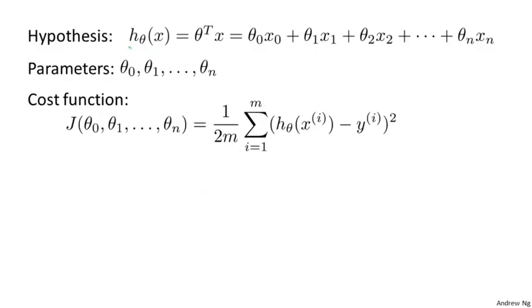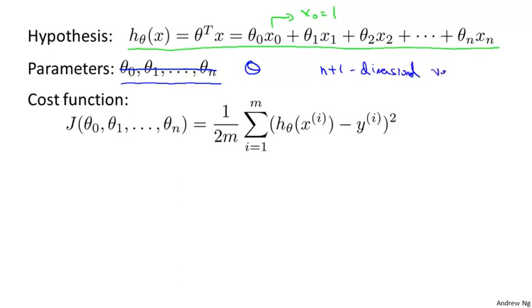To quickly summarize our notation, this is the formal hypothesis in multivariate linear regression, where we've adopted the convention that x0 equals 1. The parameters of this model are theta 0 through theta n, but instead of thinking of this as n separate parameters, I'm going to think of the parameters as theta, where theta here is an n plus 1 dimensional vector.